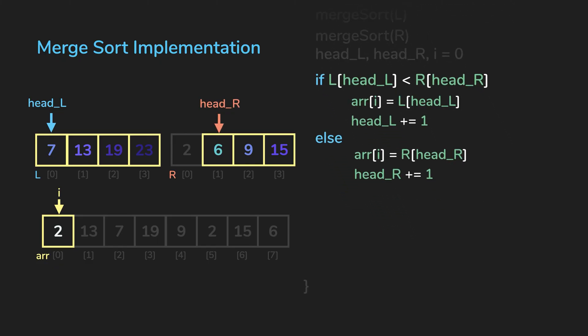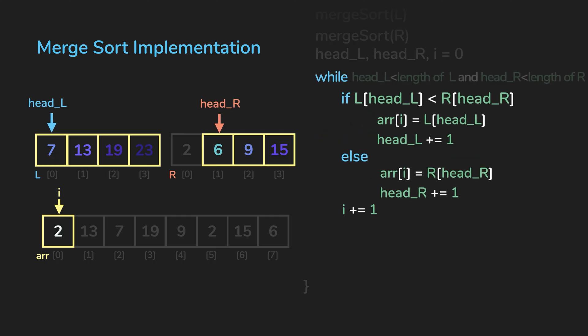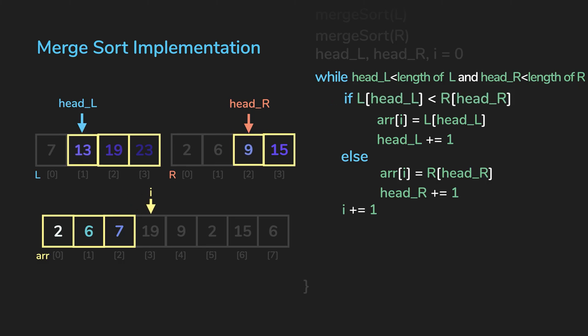We want to repeat this, so we wrap this part around with a while loop and increment i by one after each loop. We will stop the loop when one of the arrays has reached its end. So the loop will go on while head_L and head_R are smaller than the length of its array.